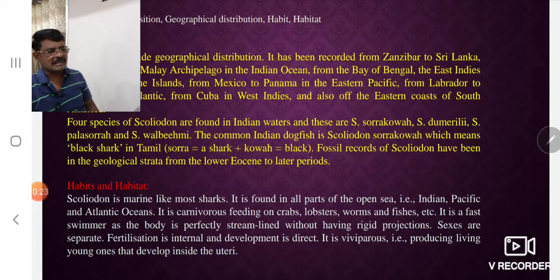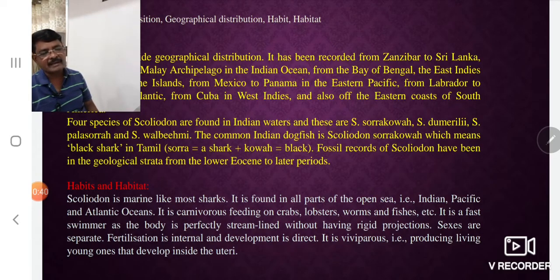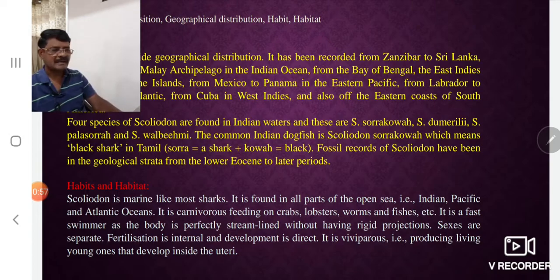Scoliodon is a marine animal like most sharks, and this shark is viviparous — meaning it produces living young ones that develop inside the uterus. The female Scoliodon gives direct birth to young ones, which is why it is termed viviparous. The sexes are separate and fertilization is internal.